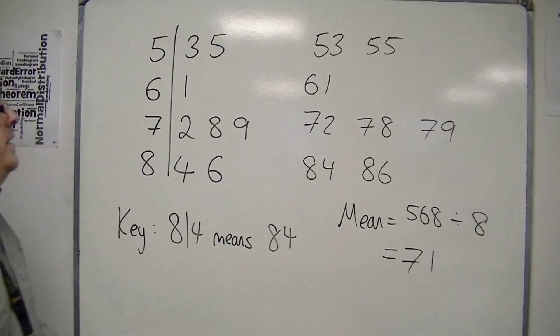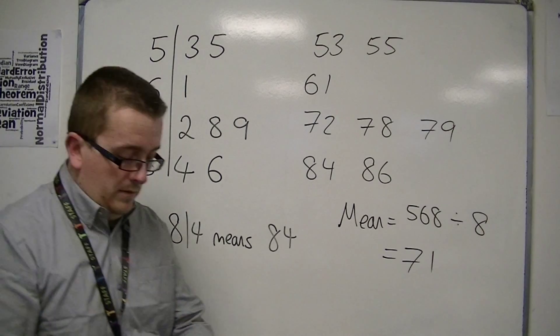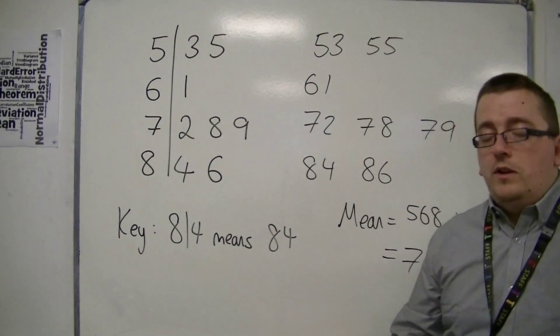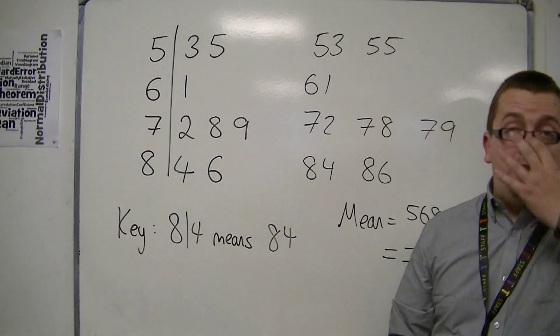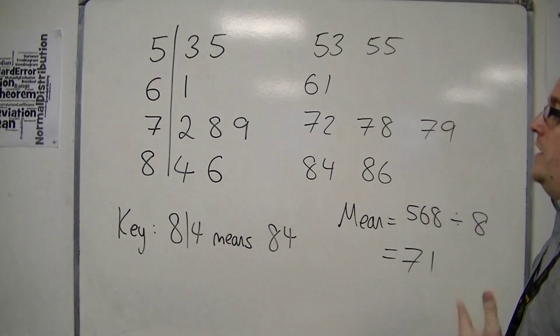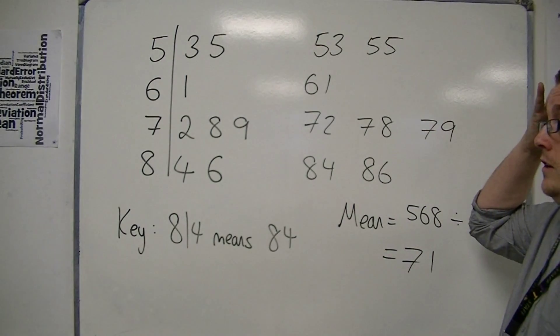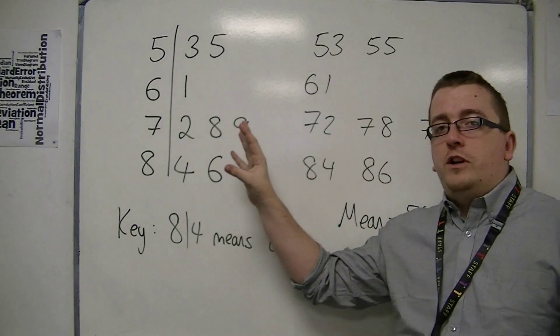So, 71 is the mean in this case. That is how you can calculate the mean from a stem and leaf diagram. And you might be able to see why this question isn't asked so much. Because, effectively, you're not actually using the stem and leaf diagram.